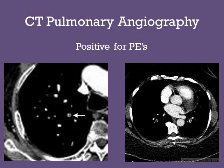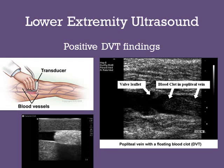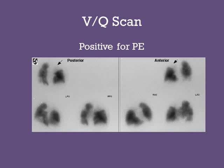Now we're going to take a look at some of the imaging studies often used in conjunction with D-dimer testing. First, we have an example of a CT pulmonary angiography that is positive for a pulmonary embolism. This slide shows an example of an ultrasound that is positive for a lower extremity deep vein thrombosis. This VQ scan is positive for a pulmonary embolism in the right upper lobe. An imaging study that is positive for either a DVT or PE combined with a positive D-dimer test is diagnostic.